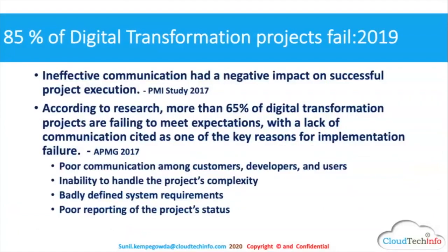Looking at digital transformation, 85% of transformation projects have failed. One study from PMI shows it is mainly because of communication. From an APMG study in 2017, 65% failed. Looking at the commonality, one of the key things is communication between customers, developers, and the business. What's happening is information is lost; there is a communication gap. The team spread across the globe makes it much more complicated. Systems are becoming more complex, not able to be comprehended with current documentation-based practices. Users are not able to comprehend requirements because various companies follow various practices, and there's no standard way of capturing user information. Reporting is also one of the costs.